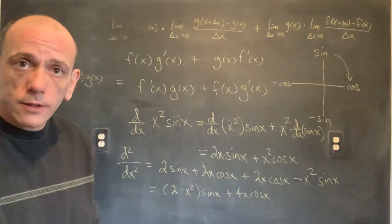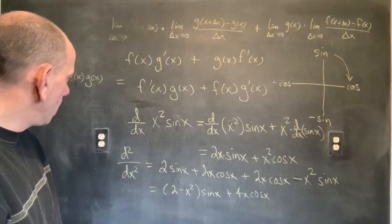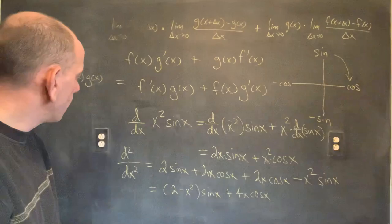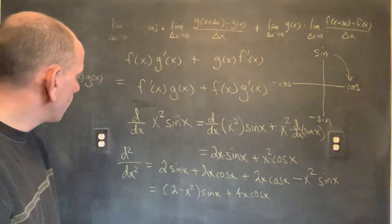So that's an example — a couple of examples — of using the product rule, and also an example of taking a higher-order derivative, the second derivative — derivative of the derivative. I'm going to keep this one short, and in the next video we'll look at the chain rule, because that'll make the proof of the quotient rule stupid easy.